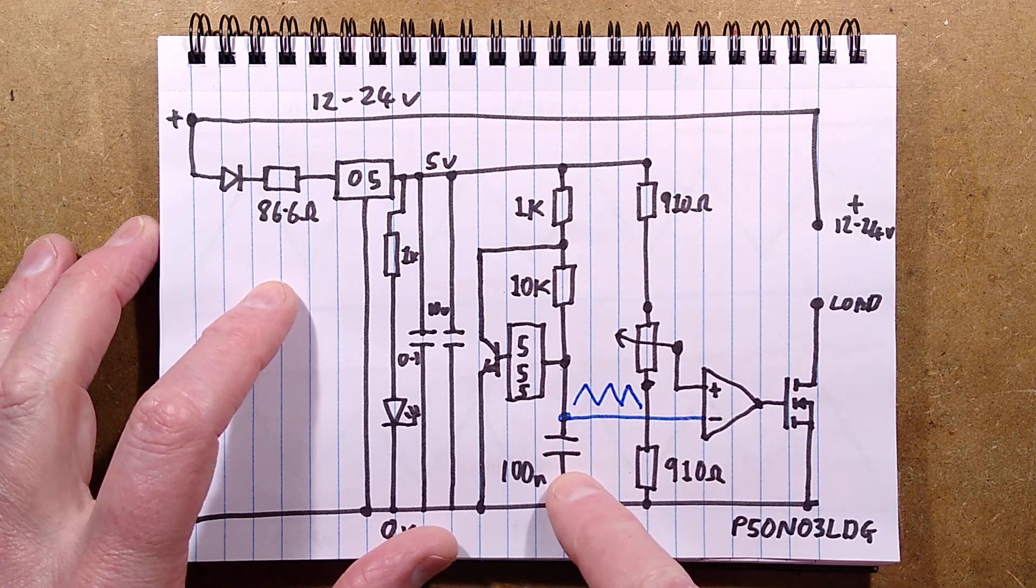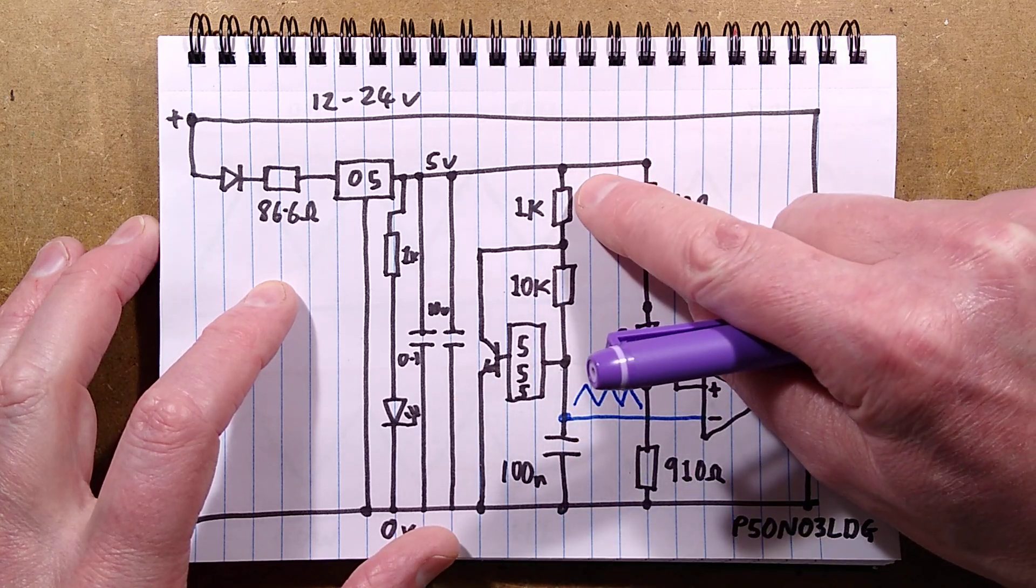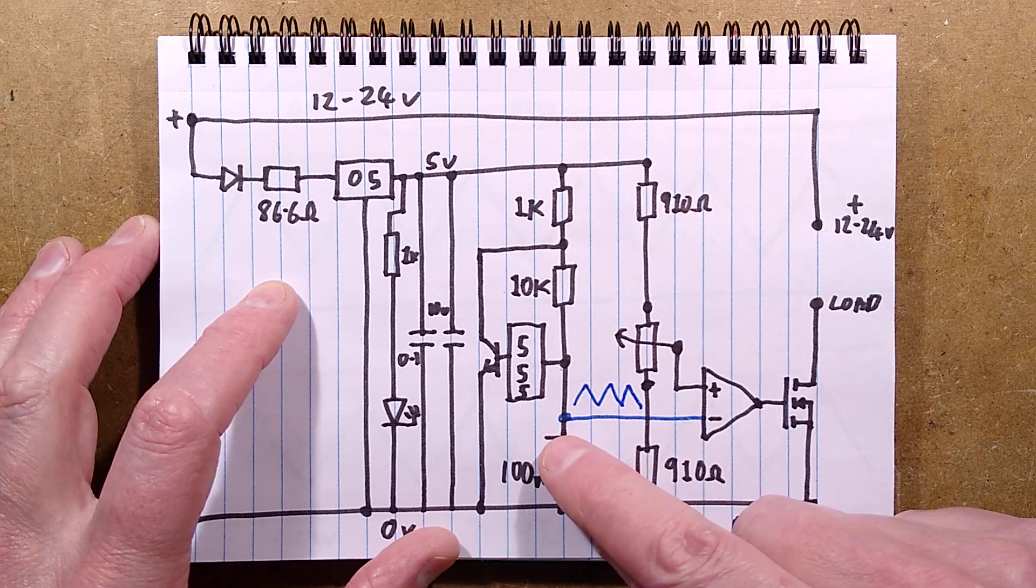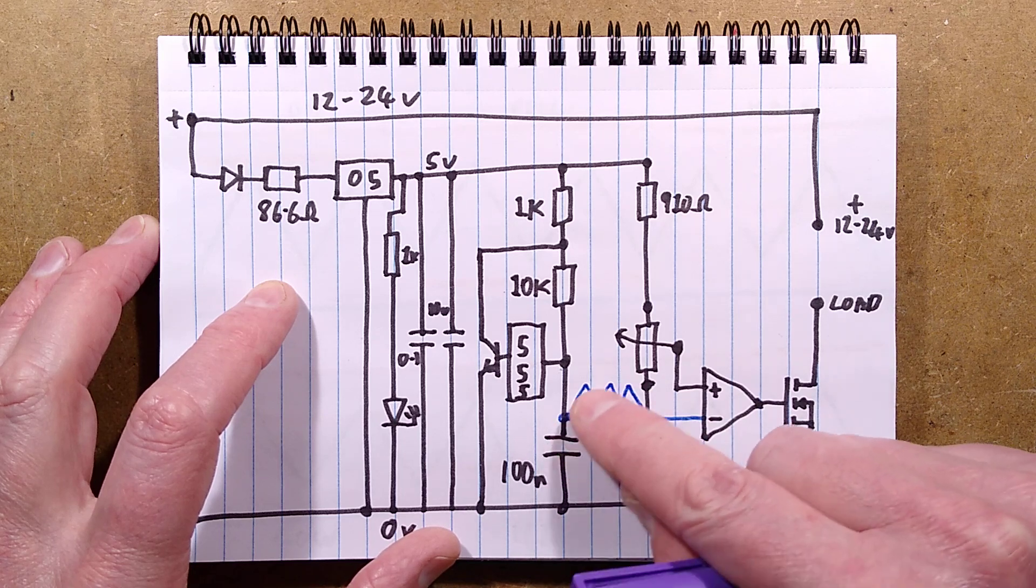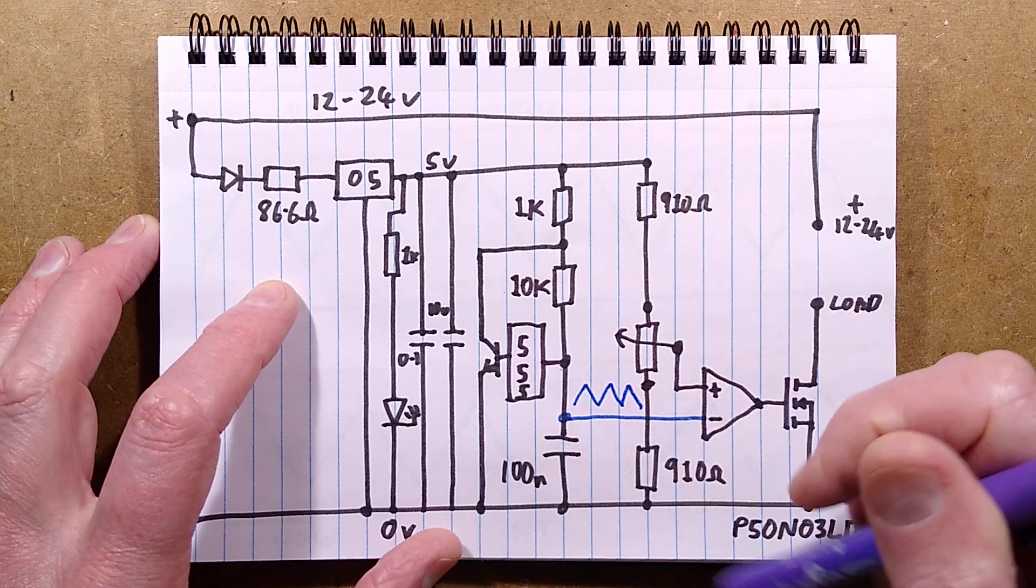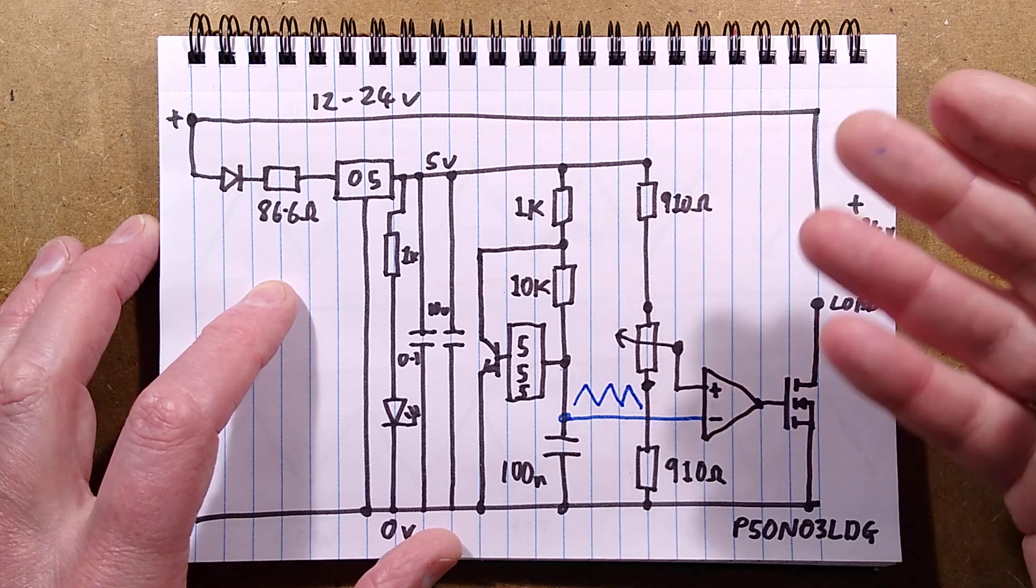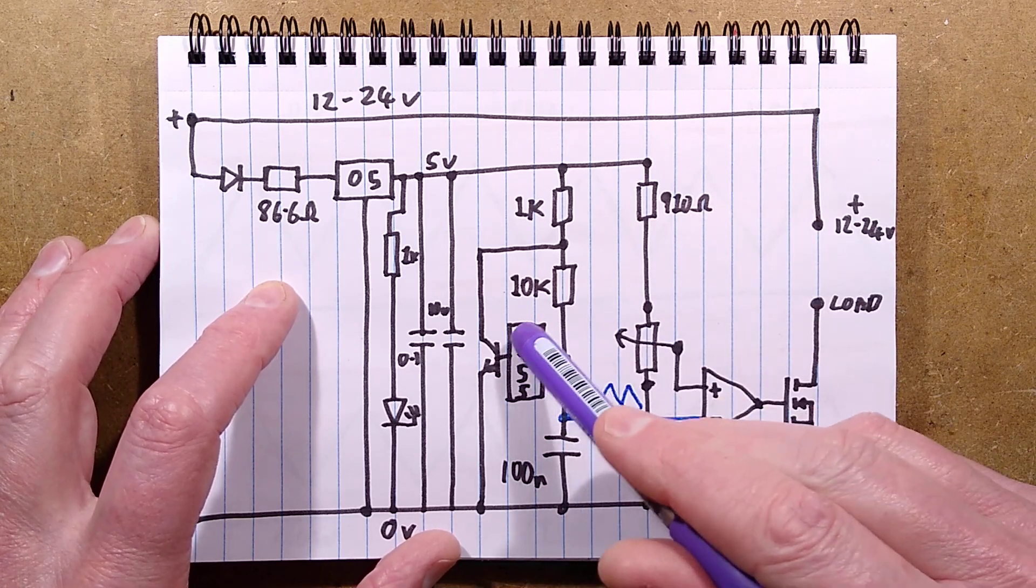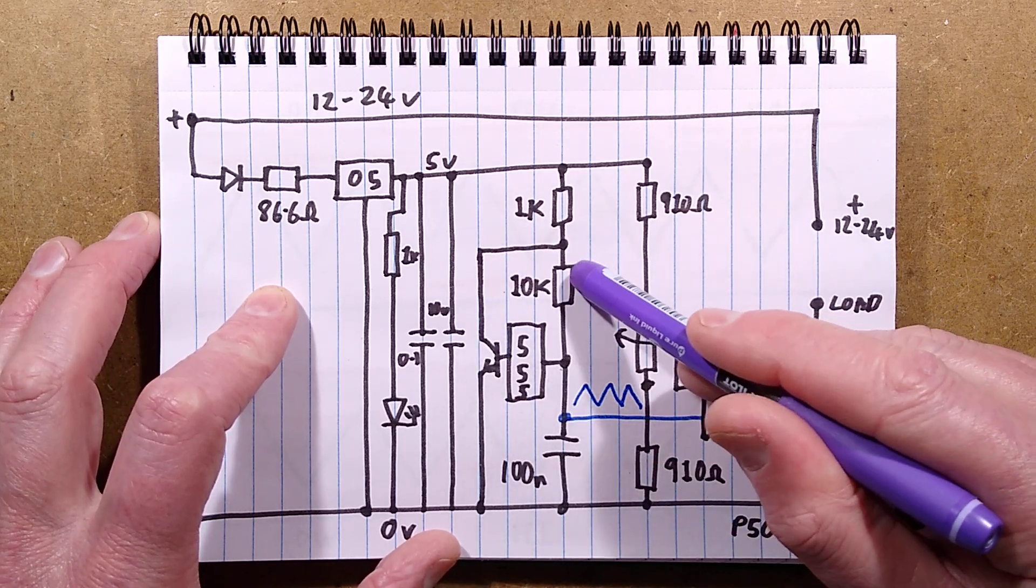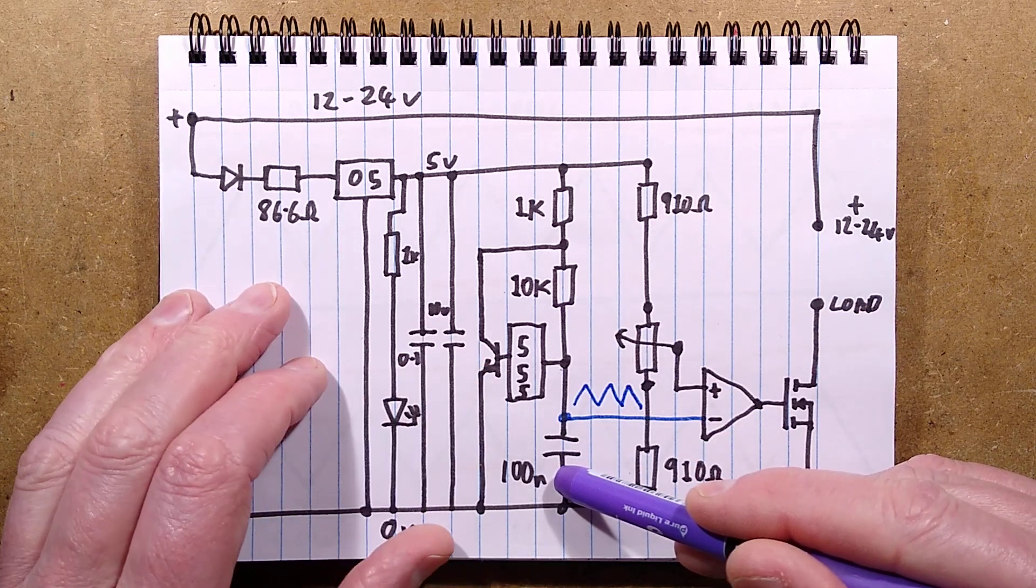The 555 has the ability to monitor a voltage level. In this case it's the voltage across this capacitor. When you turn this unit on, that capacitor starts charging via current flowing through this 1k resistor and 10k resistor. You can see I've drawn a sort of sawtooth there of what happens. Once it reaches a voltage threshold, the 555 turns an output on.